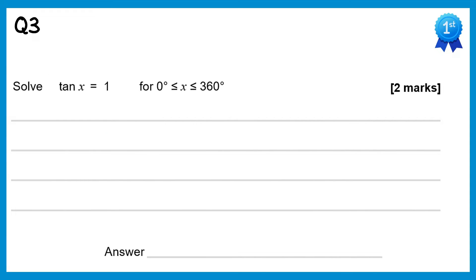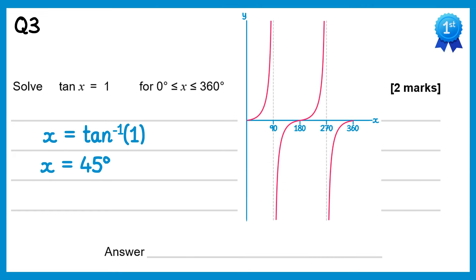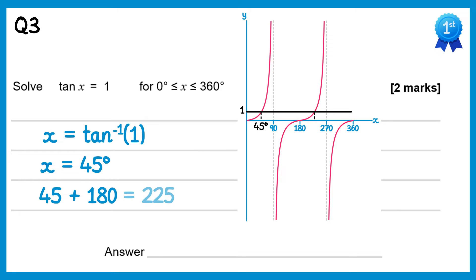For this question we do inverse tan of 1. This is an exact value — it's 45 degrees. We draw the graph of tan x and draw a horizontal line at 1, which gives us two solutions. We already have the first one at 45. Remember tan repeats every 180, so we add 180 to get the second solution: 45 plus 180 is 225. So there are two solutions: 45 degrees and 225 degrees.